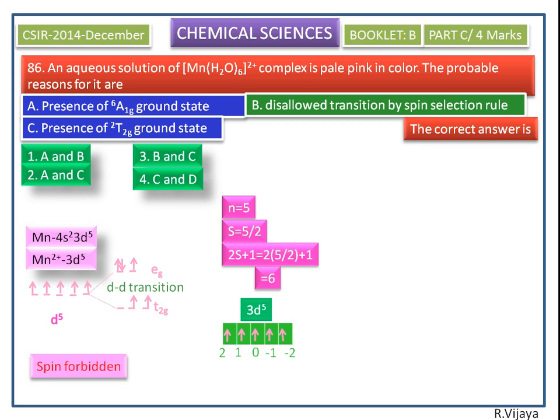Next we find the total orbital angular momentum. Here L is equal to 0. For L equals 0, the term will be S. With the spin multiplicity, the term is 6S.